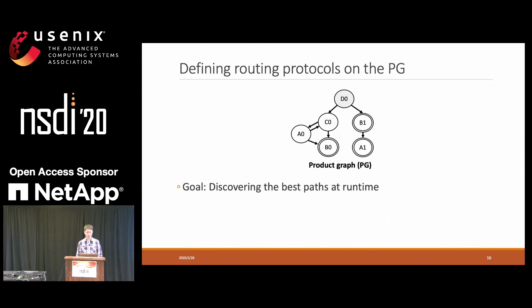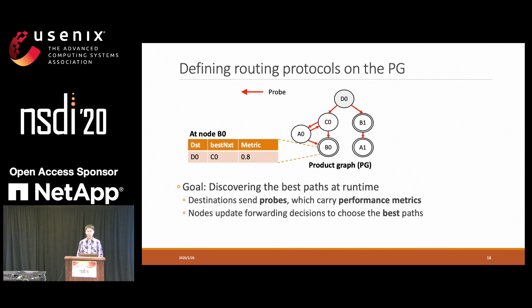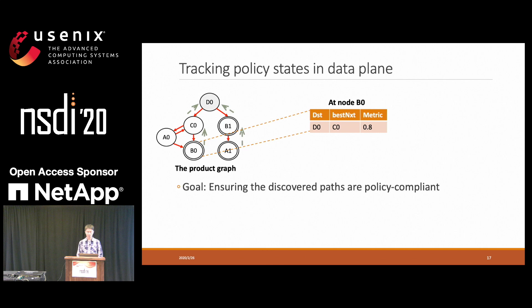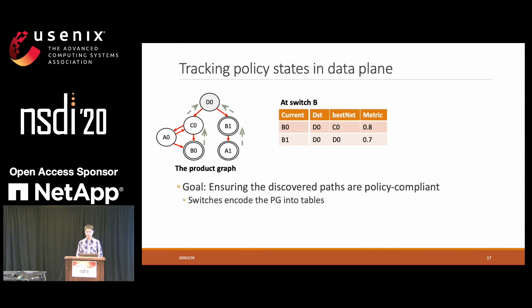To implement the routing protocol, every node sends out a probe to other nodes, and the probes carry the performance metric, which updates the forwarding table so that each switch remembers the best next hop to a destination and the corresponding metric. The source node can then send traffic along the best path based on these tables. Essentially, this is a distance vector protocol conducted on the Protagraph. We also need to ensure the generated switch implementation follows the Protagraph, so that discovered paths are always policy-compliant.